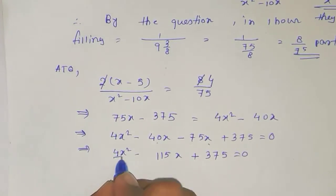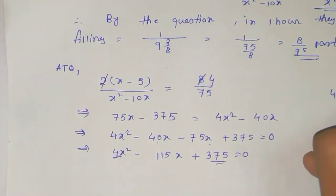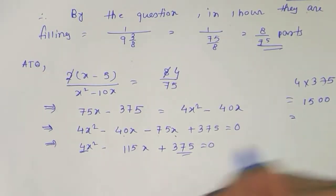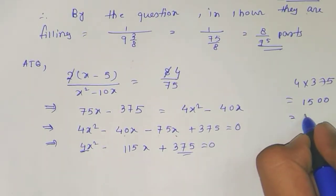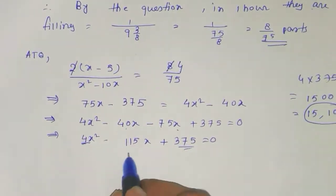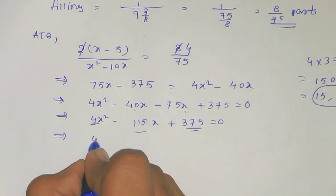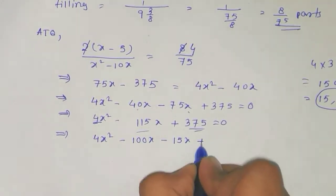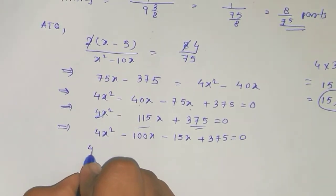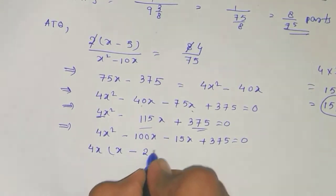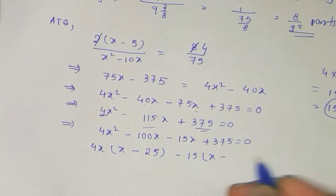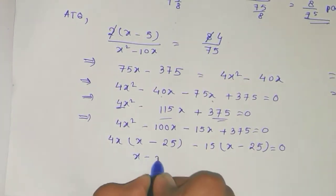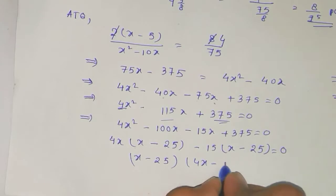To factorize, we multiply a and c: 4 times 375 equals 1500. We need two factors of 1500 that add up to 115 — these are 100 and 15. So we split the middle term: 4x squared minus 100x minus 15x plus 375 equals 0. Taking 4x common from the first two terms gives (x minus 25), and taking minus 15 common from the last two also gives (x minus 25). So we get (x minus 25)(4x minus 15) equals 0.